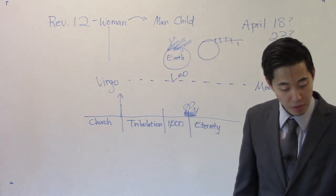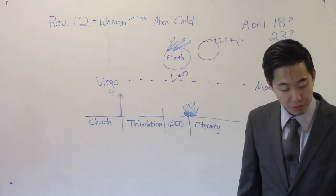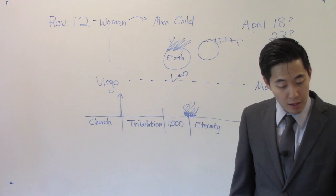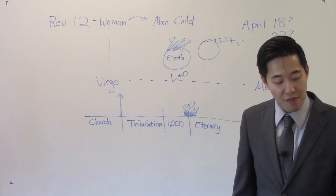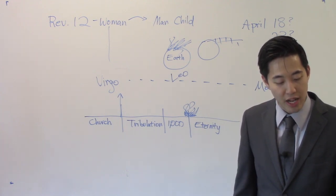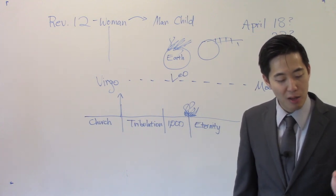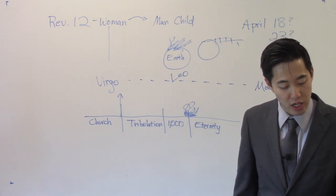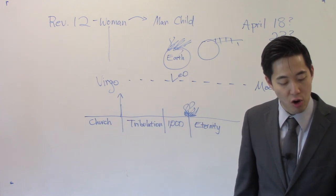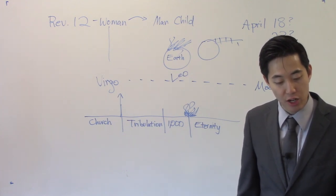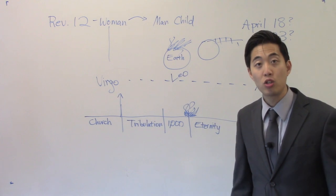Look at 2 Peter 3. 2 Peter chapter 3, verse 10. But the day of the Lord will come as a thief in the night, in the which, the what? Heaven shall pass away with a great noise, and the elements shall melt with, what? Fervent heat. The earth also, and the works that are therein, shall be burned up. See that? So all of the earth is gone.